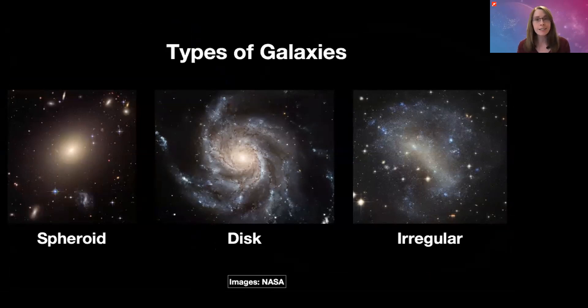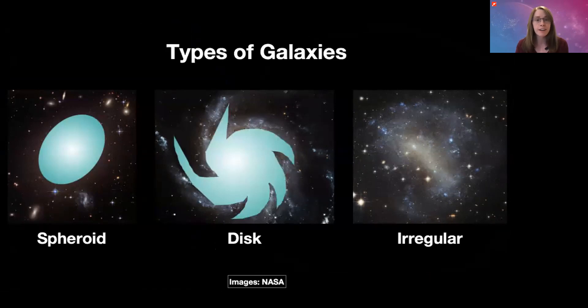There are spheroid galaxies, which are round and generally appear to be pretty smooth. There are disk galaxies, which are sort of rotating and flat, and they tend to have more structure to them, like these spiral arms. And then there's irregular galaxies, which don't really fit into either category. They can be kind of disorganized looking and can take on a variety of appearances.